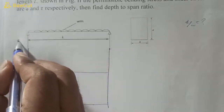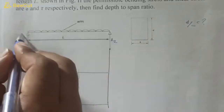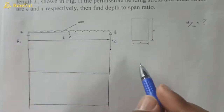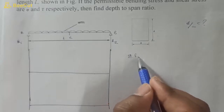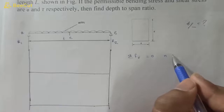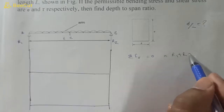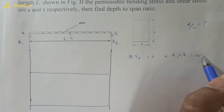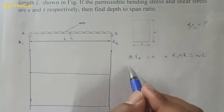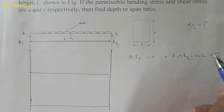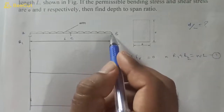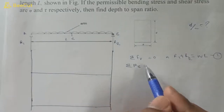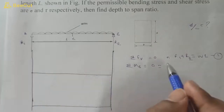The supports have reactions R1 and R2, with points A, B and midpoint C. Summation of all vertical forces equals zero, so R1 plus R2 equals the total load w into l. This is equation number one. Taking moments about point B, the sum of all moments equals zero, so R1 into l minus total load w·l acting at midpoint gives us the moment equation.